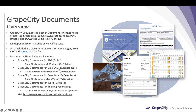Also included in this package is GrapeCity Documents for Excel .NET and Java, so GC Excel .NET and Java — these are our Excel APIs that help to work with Excel documents, modify them, save them back, and convert them to other formats.